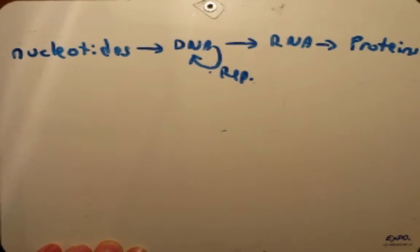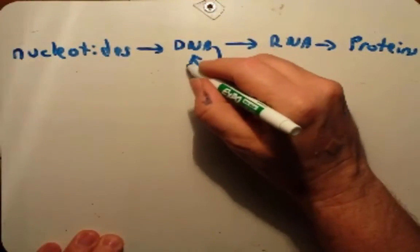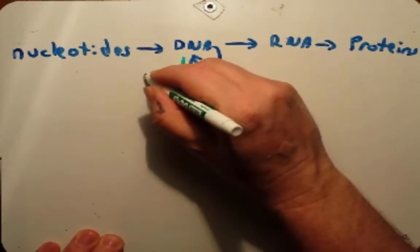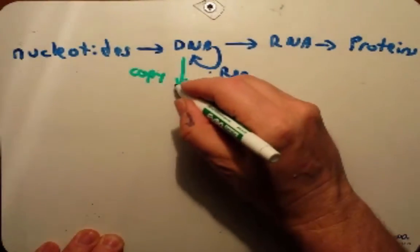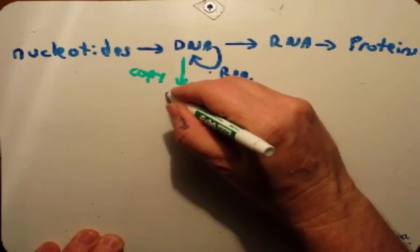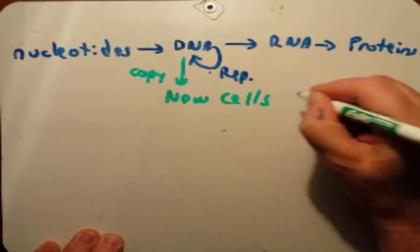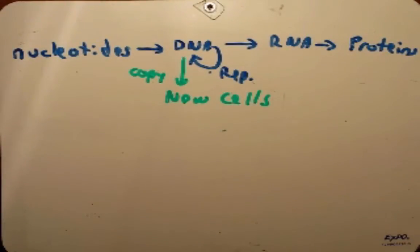It is this protein that gives us our traits, and we also talked about some exceptions where RNA was the actual end product of this pathway. More recently we talked about how this DNA is copied, how that can lead to new cells, and sometimes we want this cell to be identical as is the case in mitosis, or we want it to have some degree of variation as we see in meiosis.